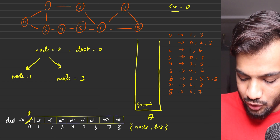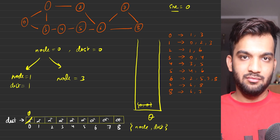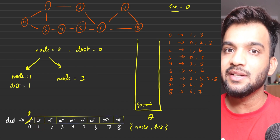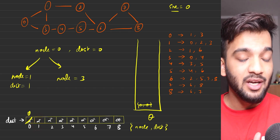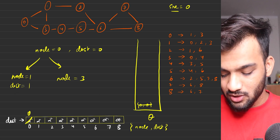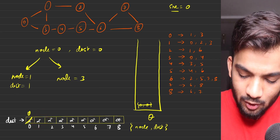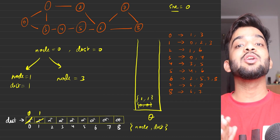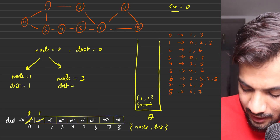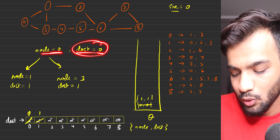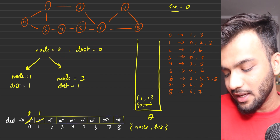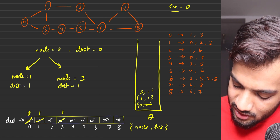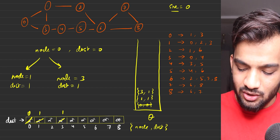Node one was at infinity, so we update its distance to one and push node one with distance one into the queue. Similarly, node three was at infinity, so we update it to one and push three comma one into the queue. Node zero's processing is done.